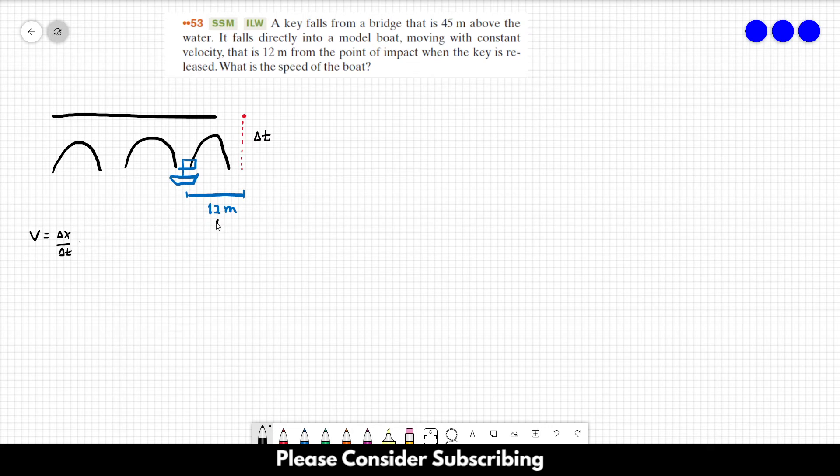This is delta x, and this is delta t. We will find the speed of the boat. So all we have to do is calculate the time it took for the key to fall to the water, and we will do that...